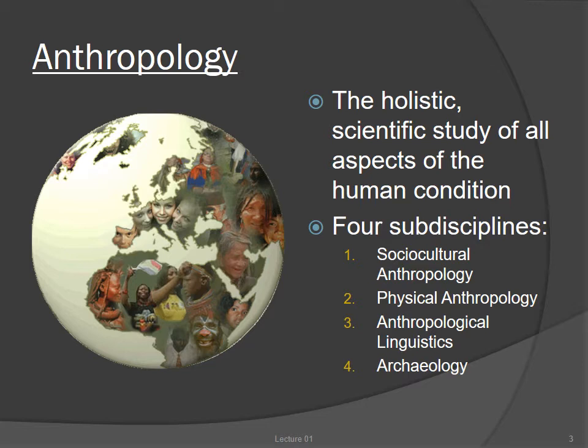American anthropology is divided into four sub-disciplines: sociocultural anthropology, anthropological linguistics, archaeology, and physical anthropology. Since all of the sub-disciplines are deeply interrelated, to do archaeology right, you need to have an understanding of all four.